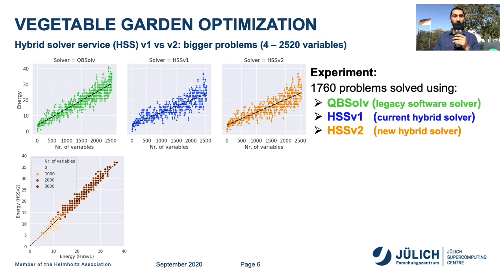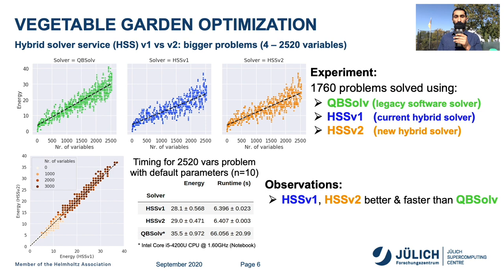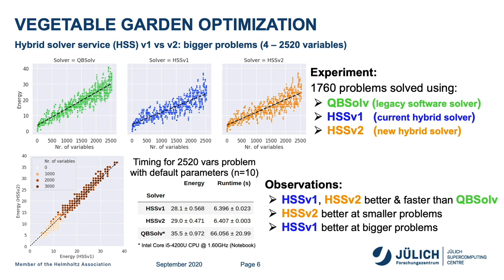On the upper three plots, we plot the energy on the y-axis and the number of variables on the x-axis. On the bottom plot, we plot the comparison between Hybrid Solver Service Version 1 and Version 2, where the color scheme of the points encodes different numbers of variables used. This table shows the timing for 2520 variable problems with default parameters. The observations made are: Hybrid Solver Service Version 1 and Version 2 are better and faster than QB Solve; Hybrid Solver Service Version 2 performs better at smaller problems; and Hybrid Solver Service Version 1 is better at bigger problems.